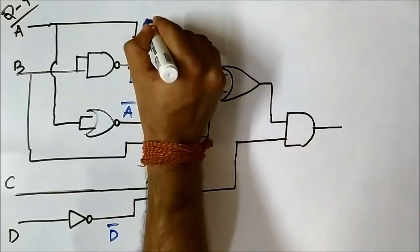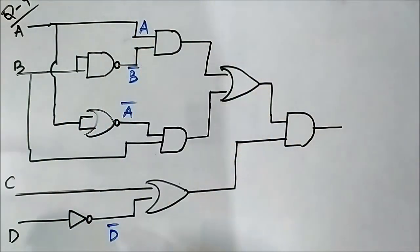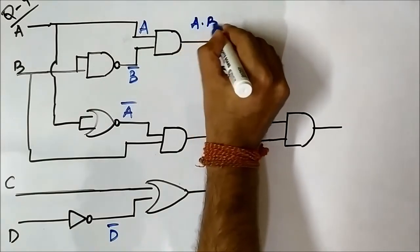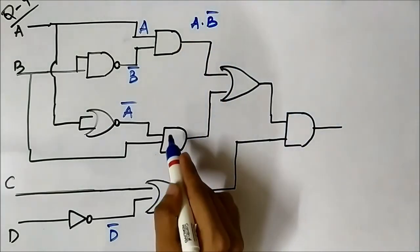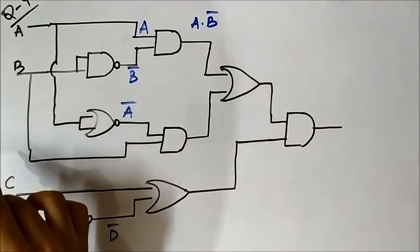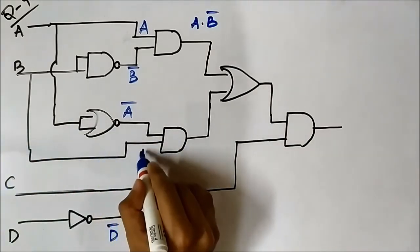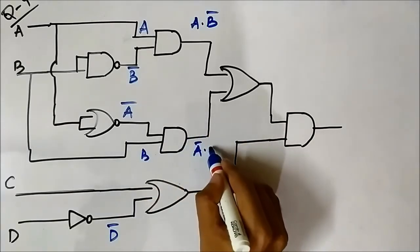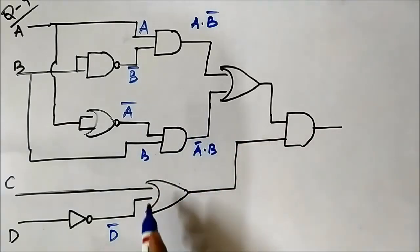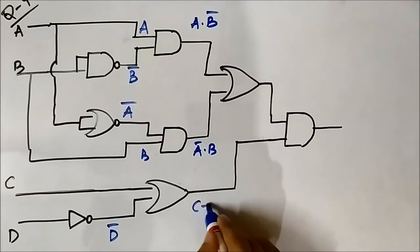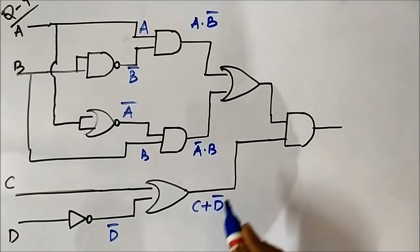In the second layer, the first AND gate has inputs A and B complement, so the output is A·B complement. The second AND gate has inputs A complement and B, so the output is A complement·B. The OR gate has inputs C and D complement, so the output is C OR D complement.